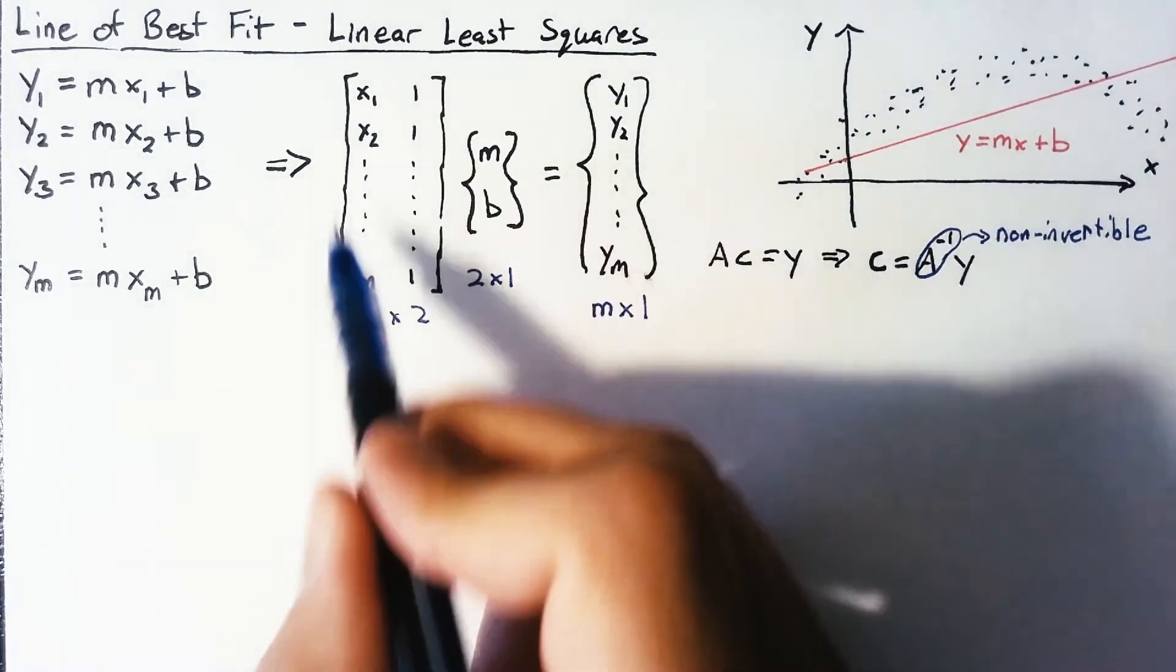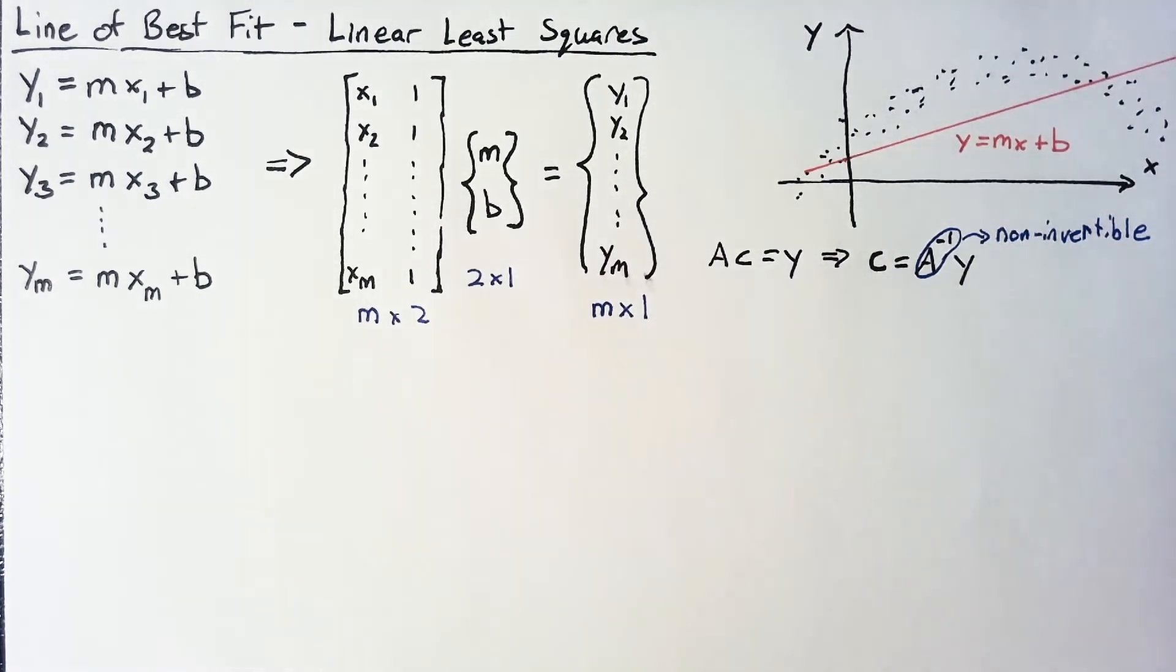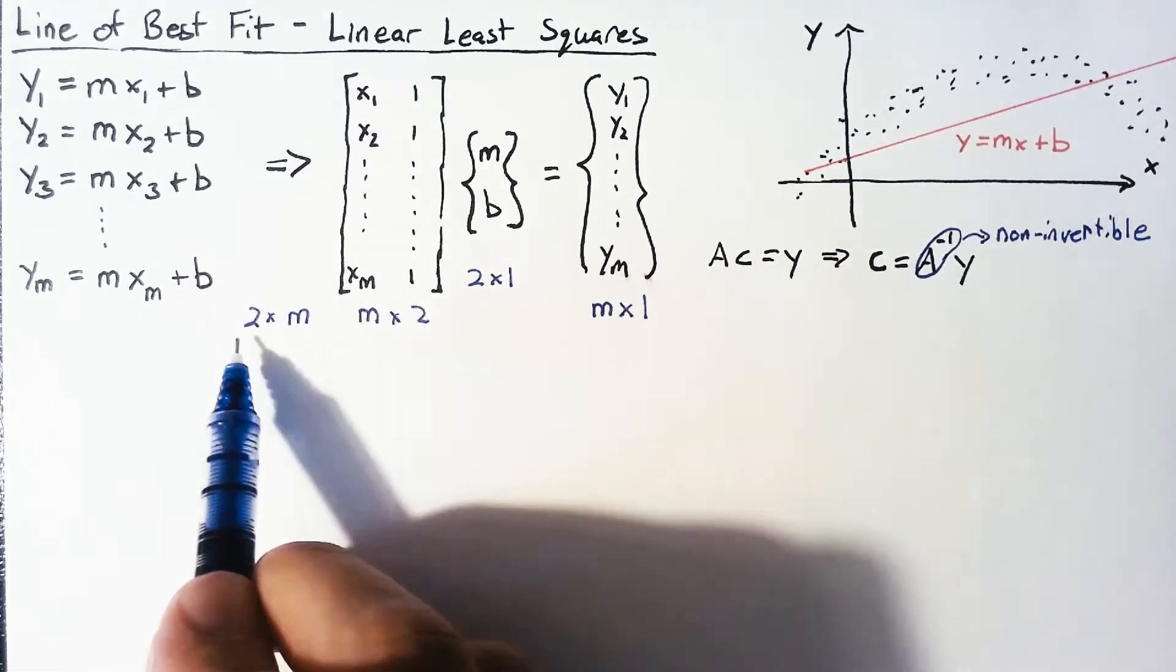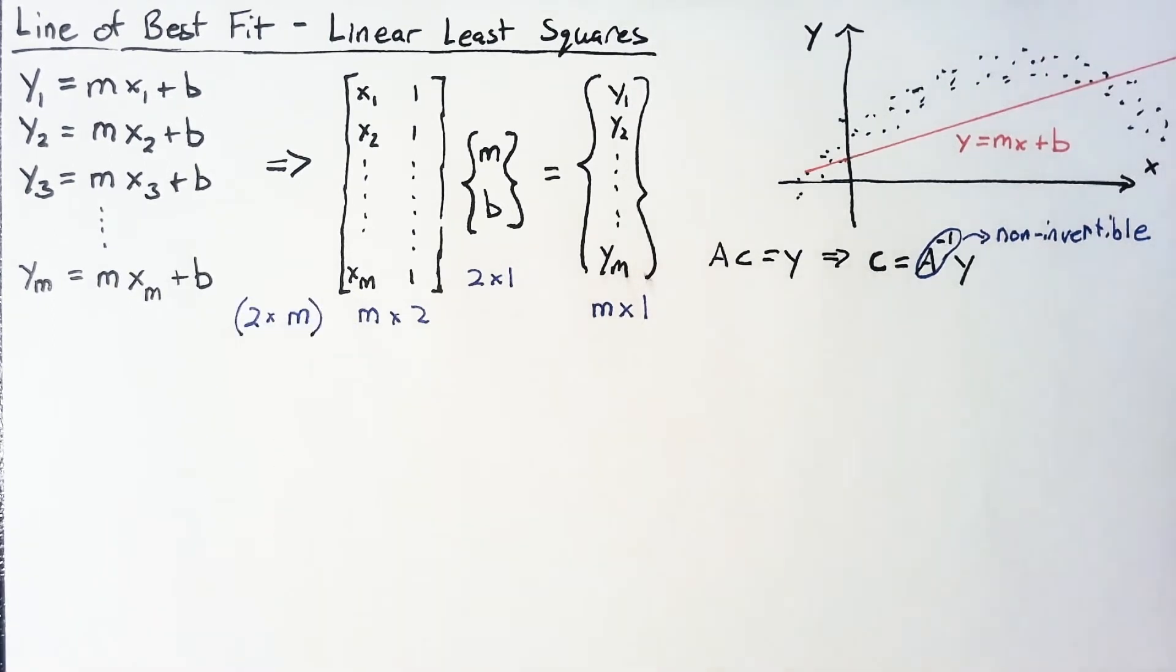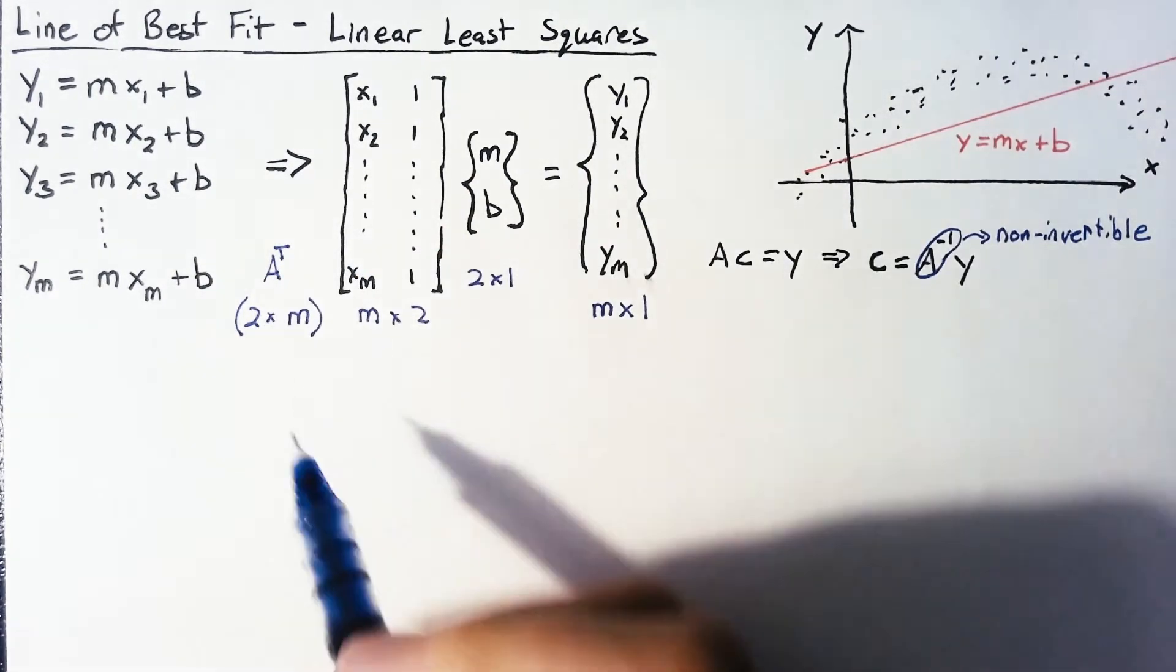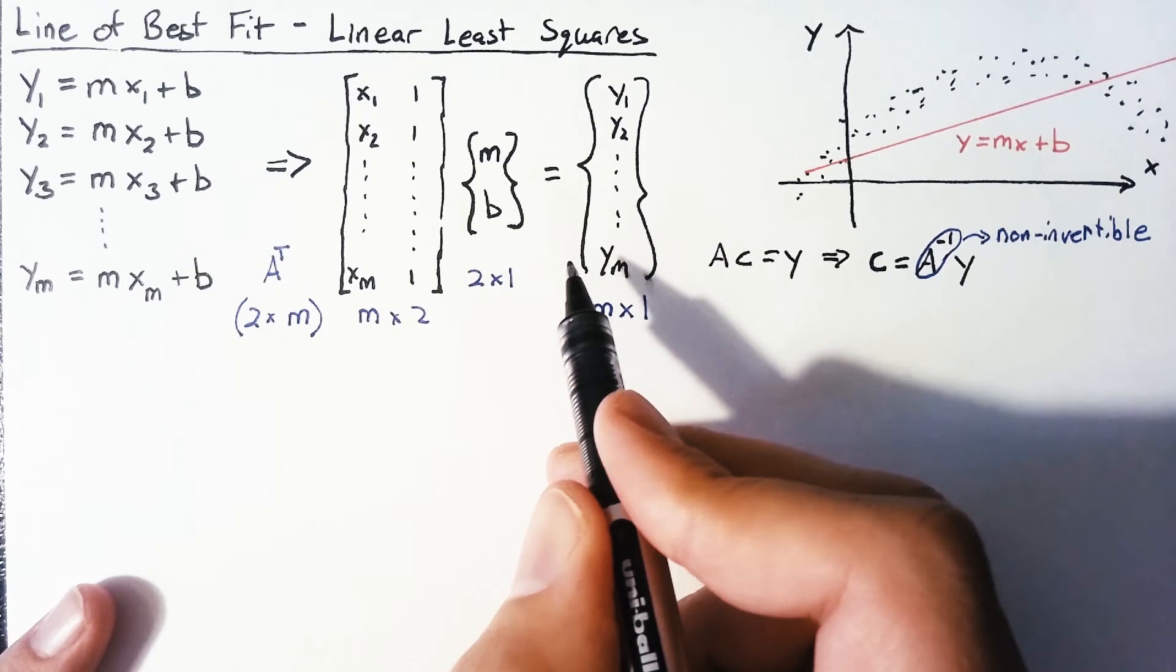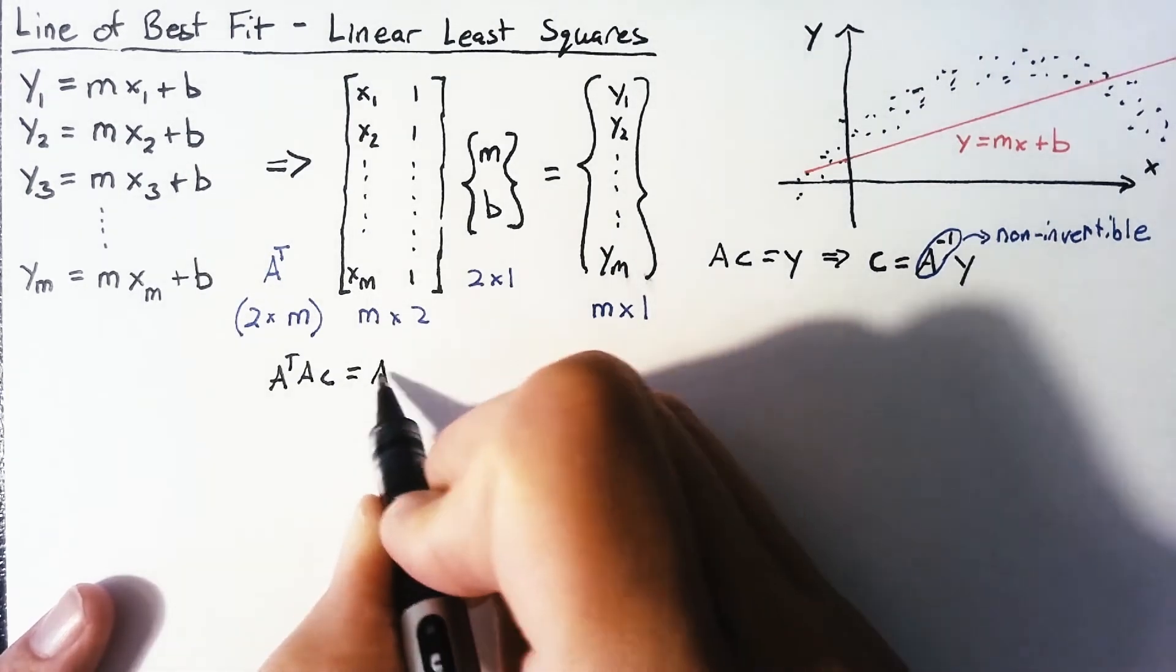So what we really want here, instead of this m by two, is going to be a two by two matrix. And we really want this to be a two by one as well. Now the only way that we can get to a two by two from this is to multiply by a two by m. So going through this multiplication, we would have the m's go away and we'd be left with a two by two. We're looking for a two by m matrix and the only one we really have available is going to be a transpose. So if we transpose A, it just flips these values and we end up with a two by m matrix that we can plug in there. So looking at this, the equation that we'll end up with if we're pre-multiplying both sides by A transpose is A transpose A multiplied by C, which is going to be equal to A transpose Y.